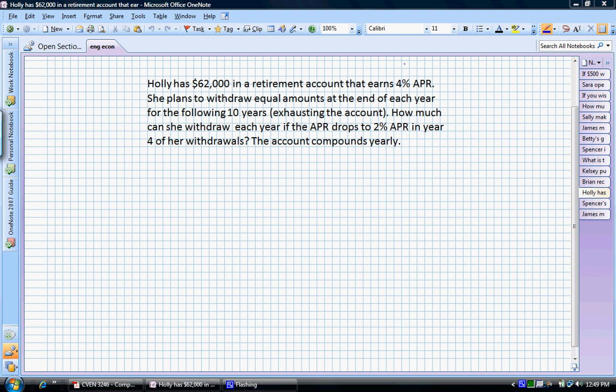The question she has is how much can she withdraw each year? What's happening in her account is it's at 4% for the first four years. Then after four years, in year four, the APR is going to switch to 2%. She wants to know if she wants to make regular withdrawals A over the course of all 10 years, what is that value A going to be?